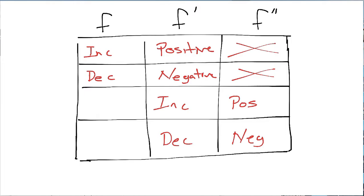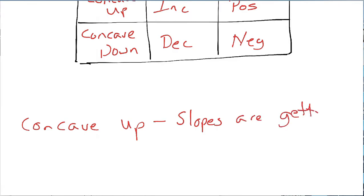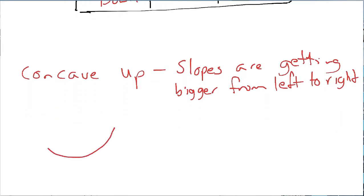So what we get in these other parts is: if F prime is increasing, F is known as concave up. I'll show you what that means — think of concave up. And then this is concave down. When you think about concave up, I want you to think about slopes getting bigger from left to the right. As a general shape, it looks like a U shape.